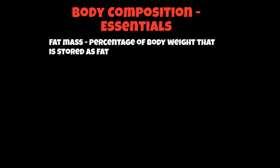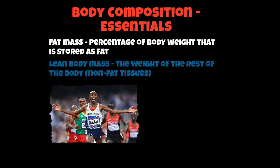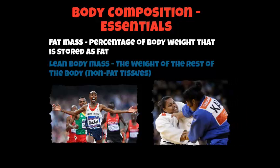So just some basic information about body composition. Body composition is made up of two components: fat mass, which is the percentage of body fat and body weight considered as fat, and also lean body mass, which is the weight of the rest of the body — your non-fat tissues like your organs, muscles, and bones. An important point to note: no matter what fat percentage you have within your body, you can still be an elite performer.